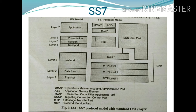Next is the SS7 User Part. Signaling System Number 7's user part provides call control, call management functions, and call setup capabilities to the network. First is the ISUP — Integrated Services Digital Network User Part. ISUP provides signaling functions for carrier and supplementary services for voice, data, and video in an ISDN environment.